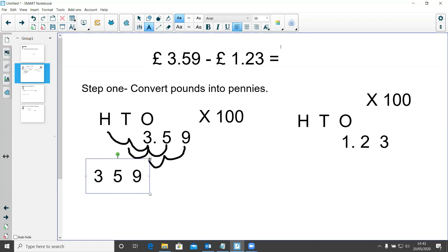I'm then going to do the same with my second amount I'm taking away. I'm going to jump two places, two places, and two places, and I get my new amount of 123.